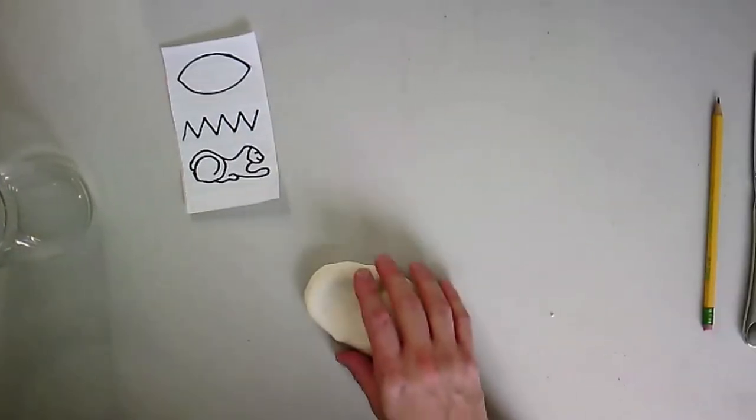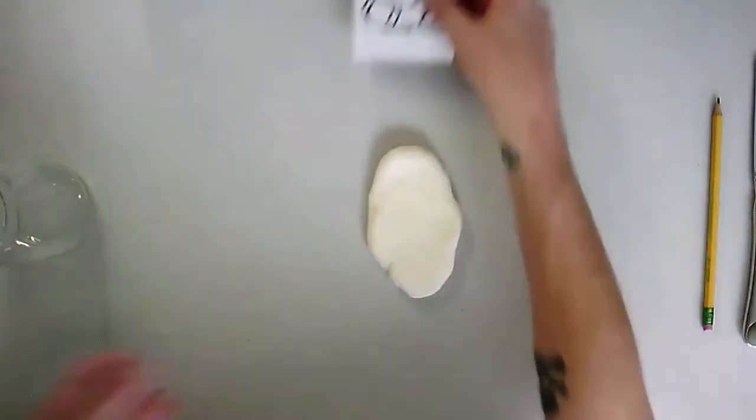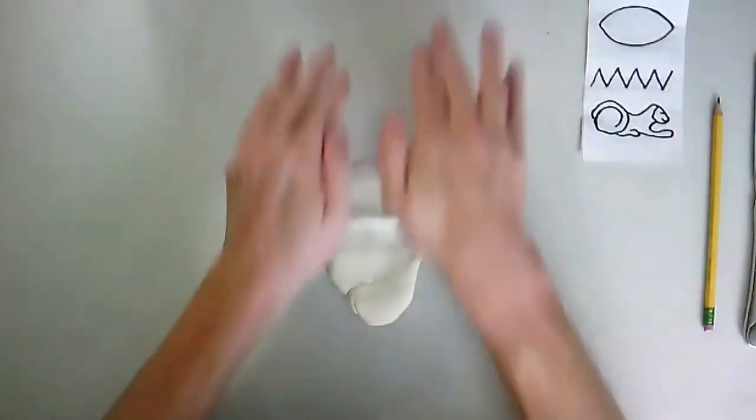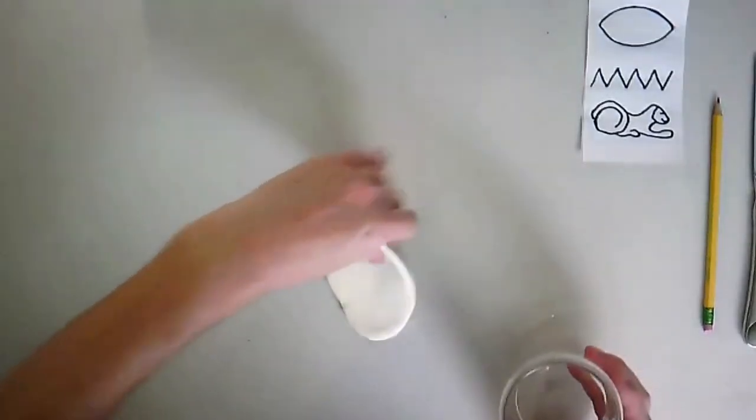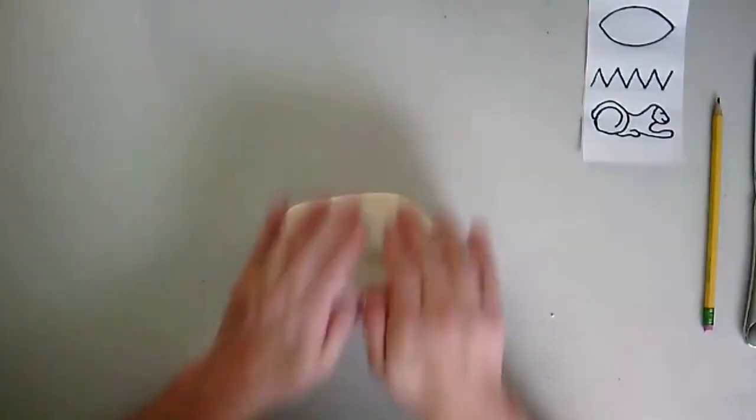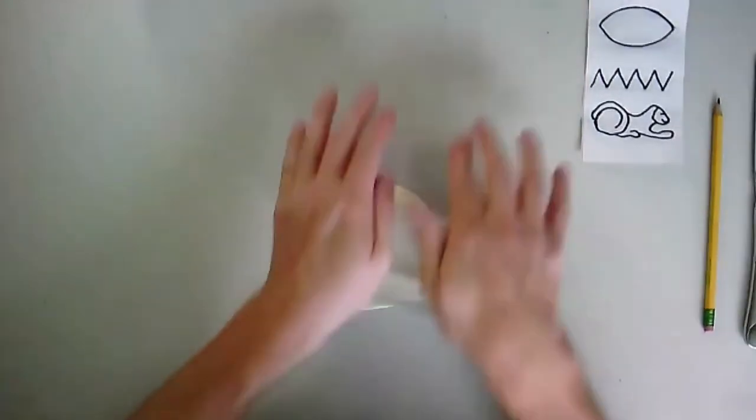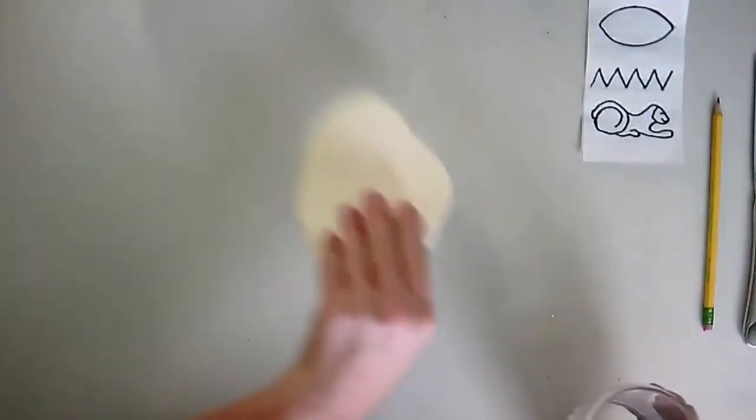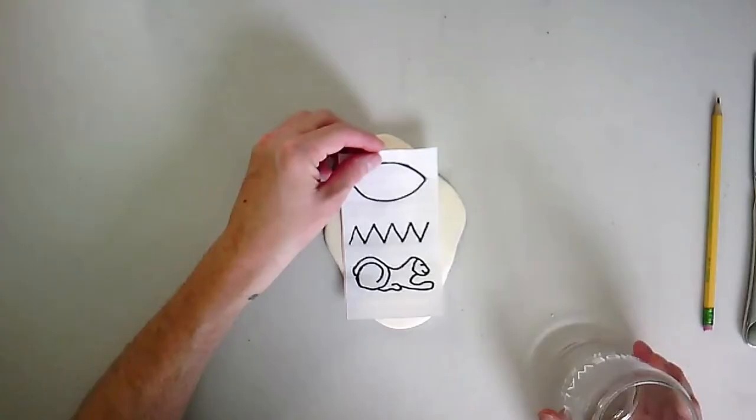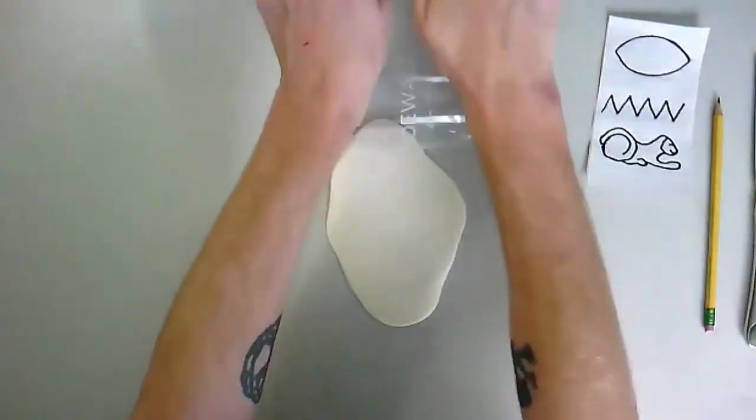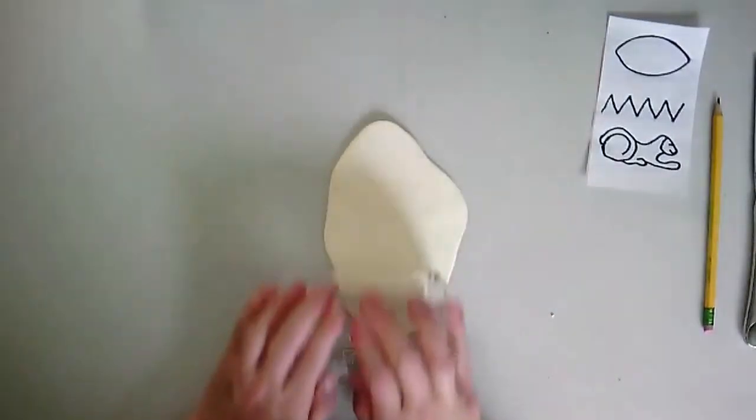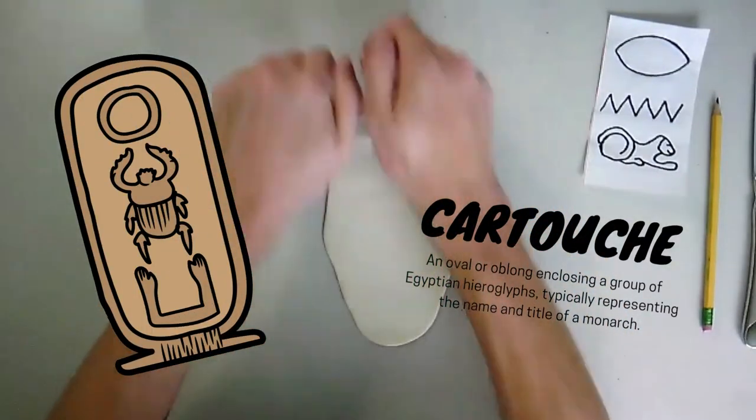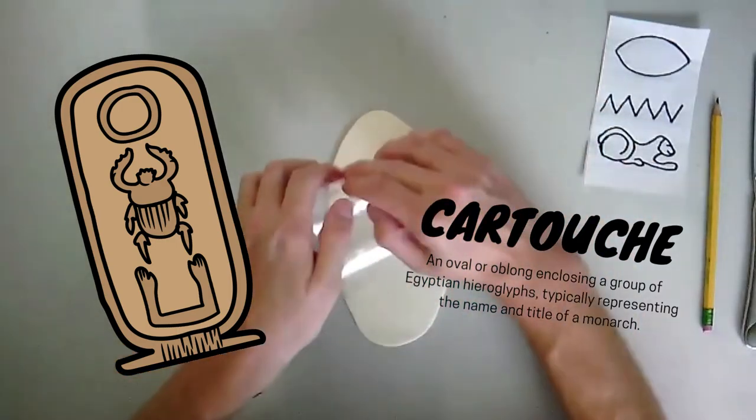First thing we're going to do is we're going to roll out our clay using a rolling pin or whatever you have at home. I just have this glass here. I want to roll it out large enough so that my hieroglyphs fit on my cartouche. Remember our cartouche is that clay tablet that the pharaohs would use to put their names. It's kind of like a nameplate for them. So I'm just rolling out my clay nice and flat.